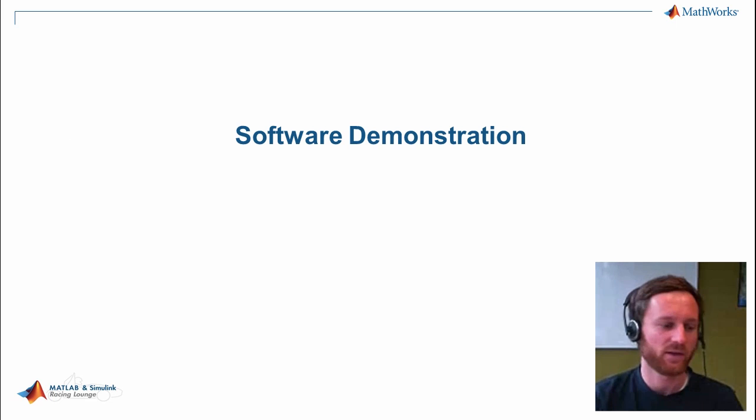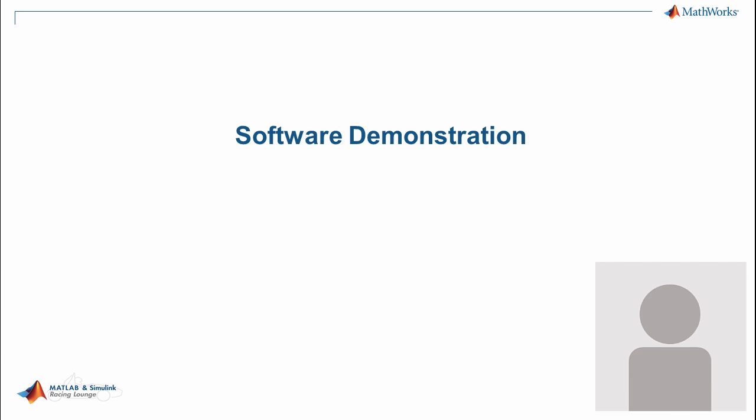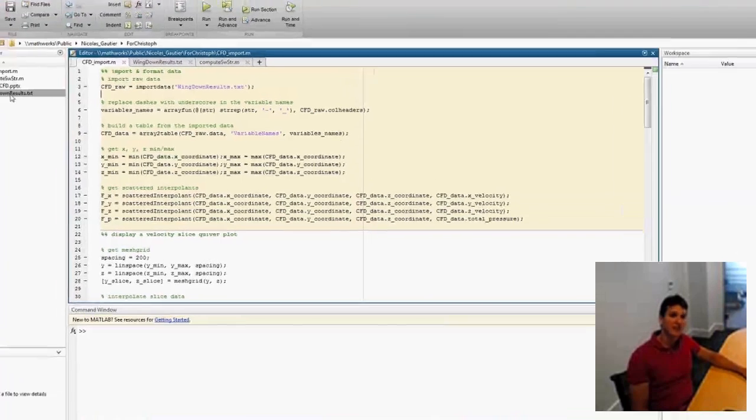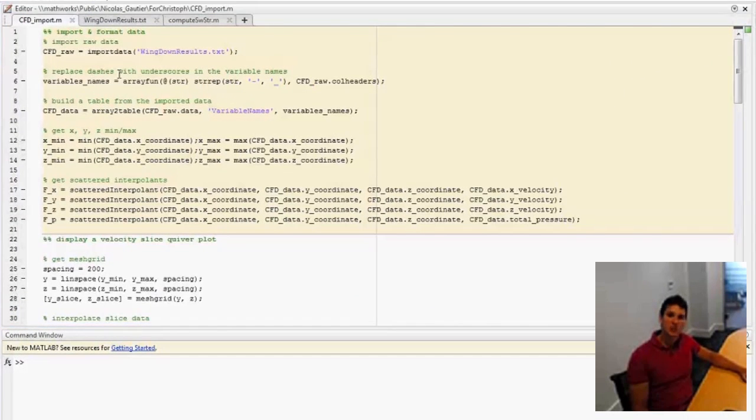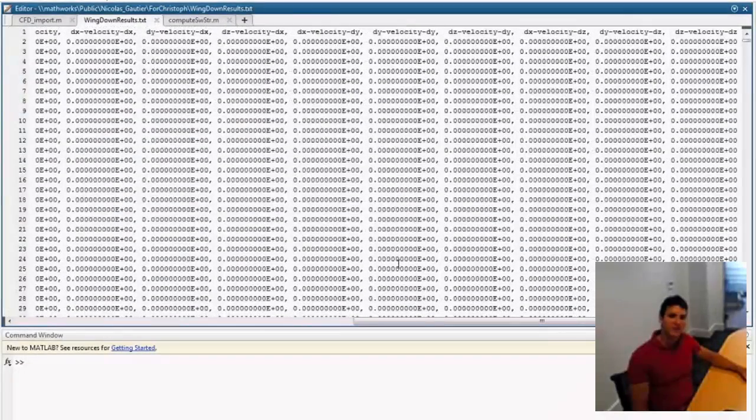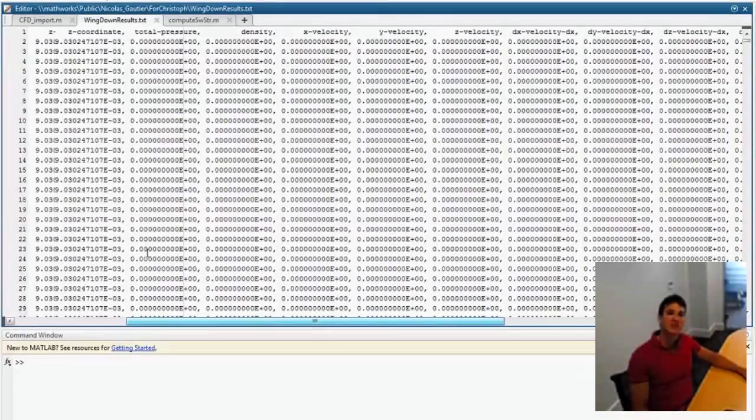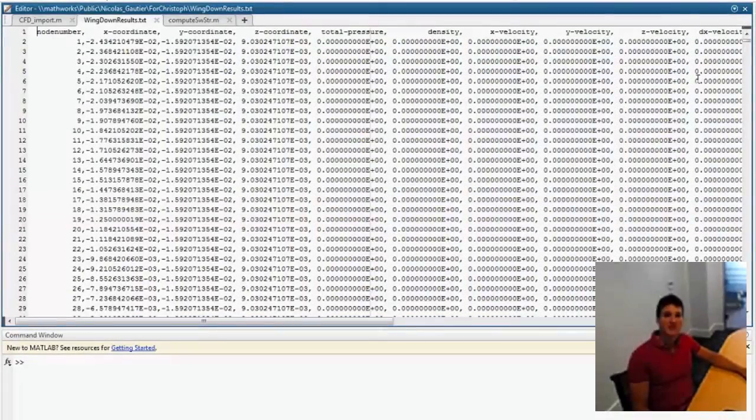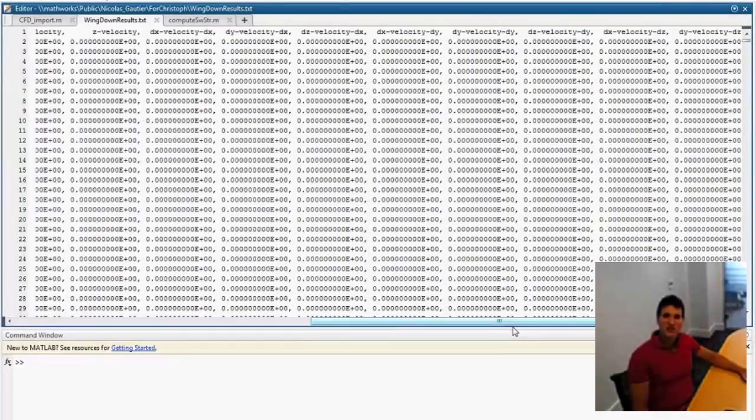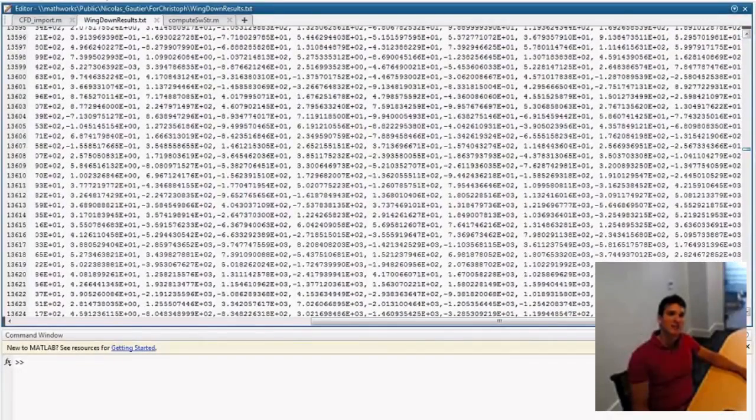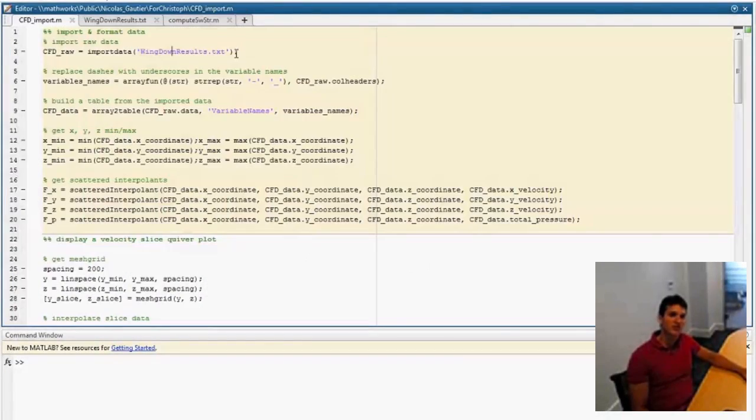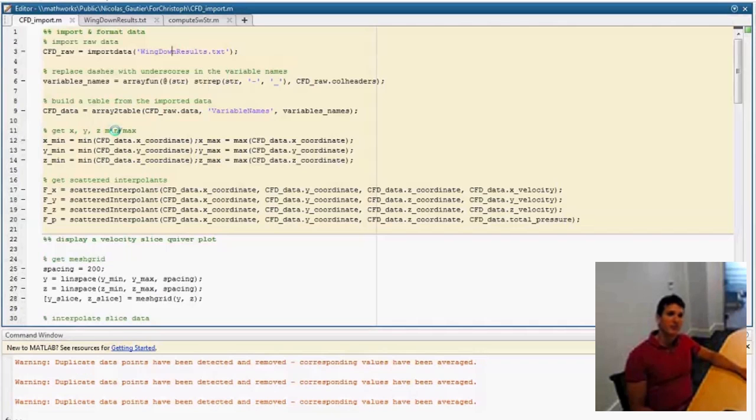Now I think we can jump right away into the topic. Really interesting to see your software demonstration. Let me just switch to MATLAB. What we have is a CFD results file, it's a text file. So let's just look at what it looks like. We see different columns here - there's XYZ coordinates, total pressure, density, XYZ velocity, and also some velocity derivatives. There's quite a bit of data. So let's see how we can get that into MATLAB. First of all we do an import, and then we're going to use a new feature from the newer releases which is the table.